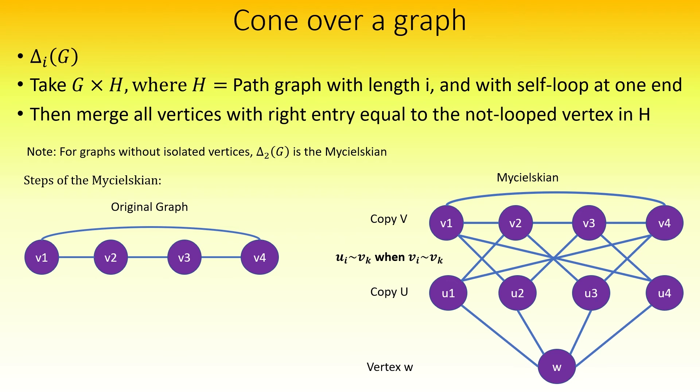And finally, add a new vertex w and connect it to all of the vertices in the second copy u. Let's check out an example of the cone construction and its equivalence to the Michelskian for i equal to 2.